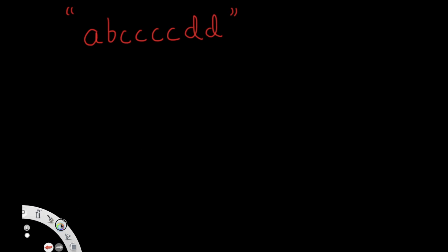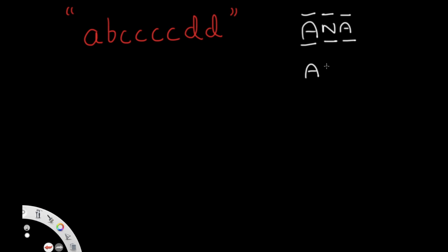Let's say we're given these letters as our input: A, B, C, C, C, C, D, D. A palindrome is something like 'ANA' — when you read it from left to right you get A, N, A, and when you read it from right to left you also get A, N, A. So a palindrome reads the same in both directions. And since this is case sensitive, capital A, N, and small a would not be a palindrome — but all the same case would be.